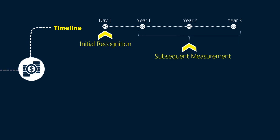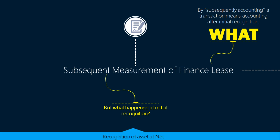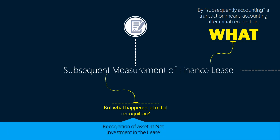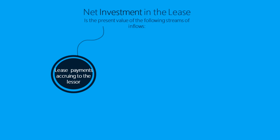We'll come back to the example of the 3-year lease contract, but first we need a quick reminder of what we had done at initial recognition. The finance lease is initially recognized in the books of a lessor as an amount called net investment in the lease. Net investment in the lease is simply the present value of two streams of future inflows: first, the lease payments, and second, the unguaranteed residual value.